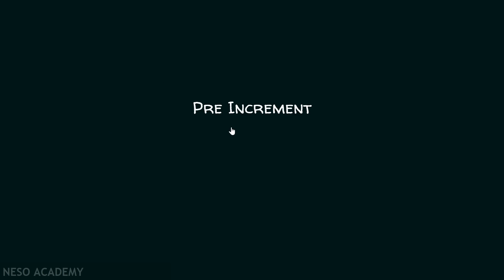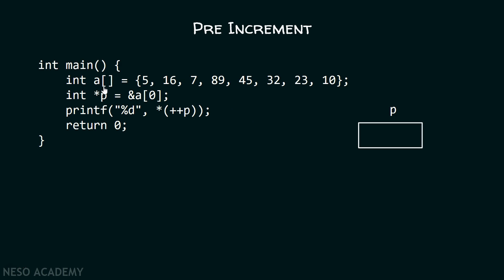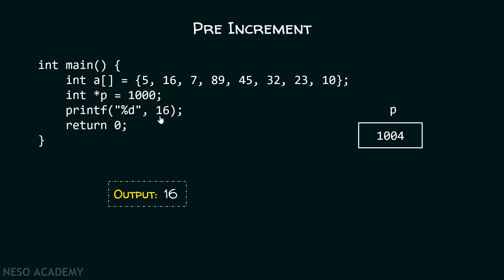Now, let's see what happens when we do a pre-increment. Again we have this array A and pointer P is initially pointing to the first location of this array. Therefore, the pointer P initially contains the address 1000. With the help of this printf function, I want to print the value of star ++P. Here it is pre-increment. Therefore, the increment will happen first and then the assignment will be done. We know after increment pointer will point to the location which contains the address 1004. Hence, it will get replaced by 1004. And with star 1004, we get this value 16. Therefore, it will get replaced by 16 and hence the output is 16.